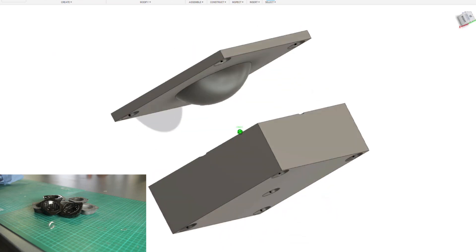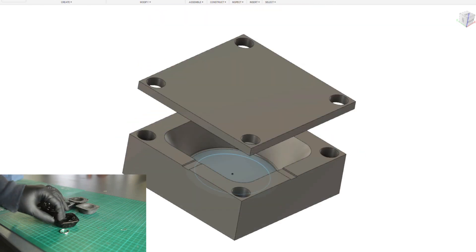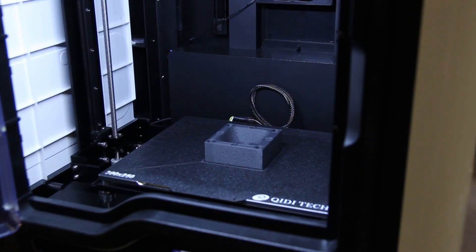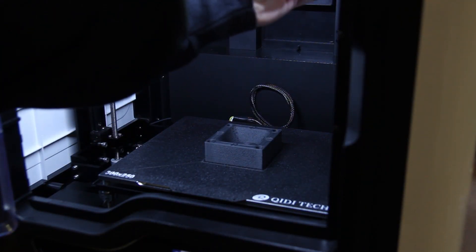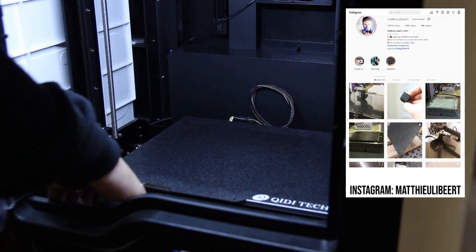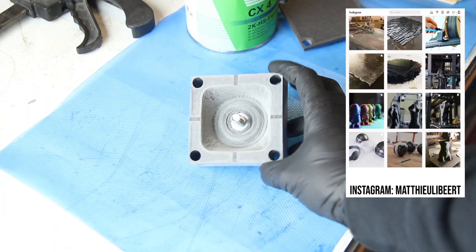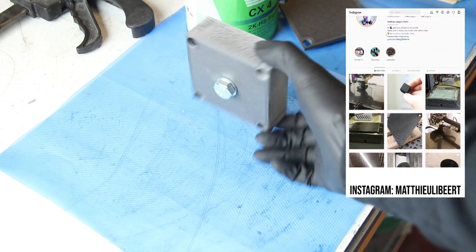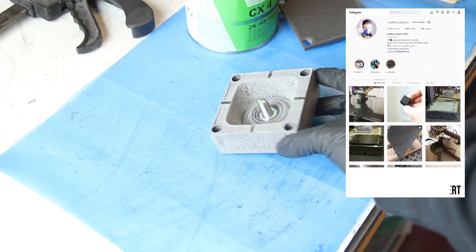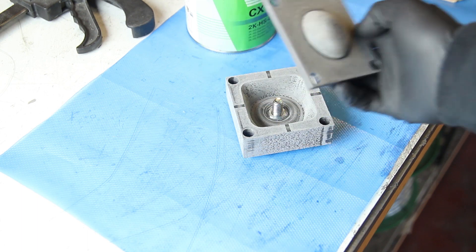We started with a 3D print. I've modeled a model in Fusion 360 just to see how it would look like and have a good piece in my hands to see if it would fit. It was printed on the Chidi Tech printer, the CF Plus I think, printing in PA12 carbon fiber filament, so this is a carbon fiber filled nylon, just to have the first base sample to make a mold off.